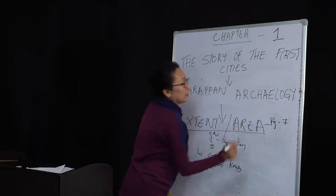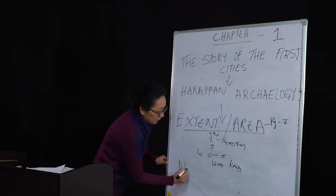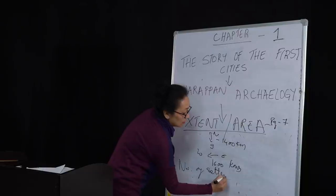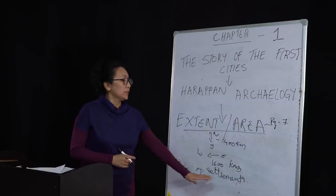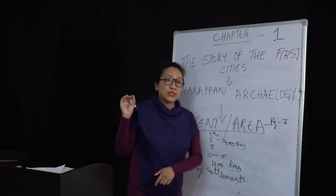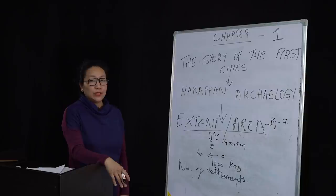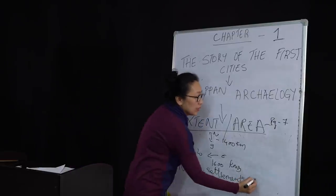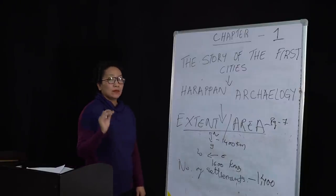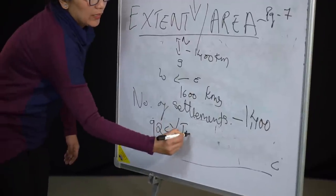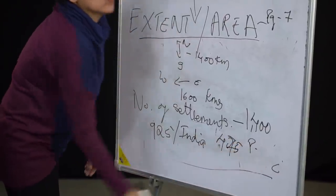When we look at the extent of the area, it becomes important to know the number of settlements, because no civilization takes place without a city or settlement. By the year 1947 when the British left India, there were 40 known settlements. As time passed, excavations increased that number to 1400 settlements — of which 925 are in India and 475 are in modern Pakistan.